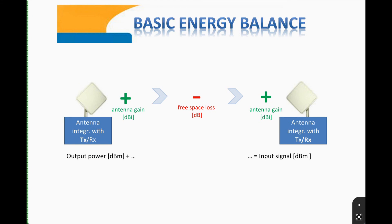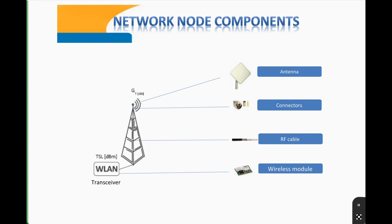Currently, long coaxial cables between transceivers and antennas are usually eliminated. Active devices are mounted directly in antenna boxes to minimize connection loss. A node of a wireless network — for example, a transceiver, access point, or wireless adapter — consists of the following components: a wireless module (transceiver card), an antenna cord connecting the wireless module with the antenna, RF connectors, and an antenna, which converts electric signals into radio waves and vice versa.